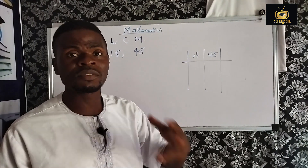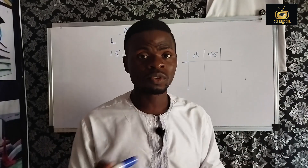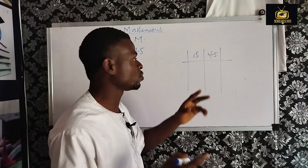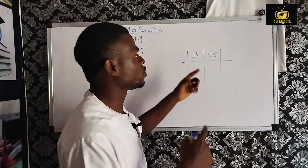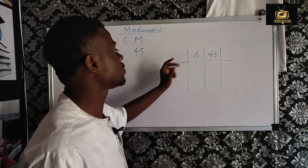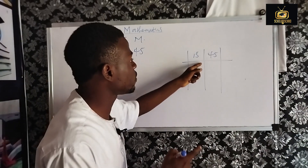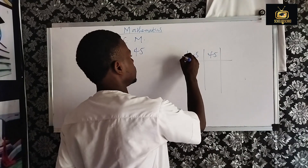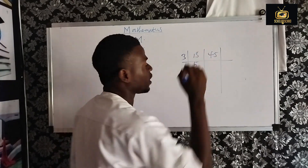Can 2 go into 15 without a remainder? No, it gives remainder 1, so it can't divide it. Can 2 go into 45? It still gives a remainder. Let's try 3 — can 3 go into 15? Yes, 3 goes into 15 and gives us 5. Write 3 on the side; 3 into 15 gives 5.